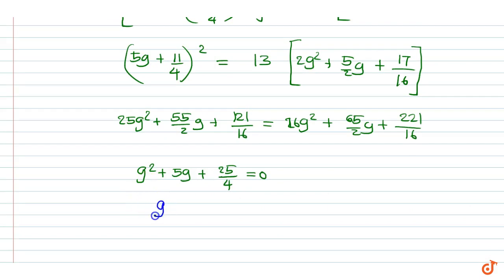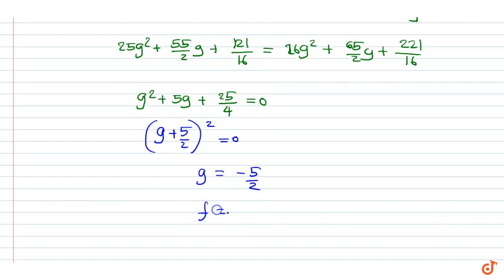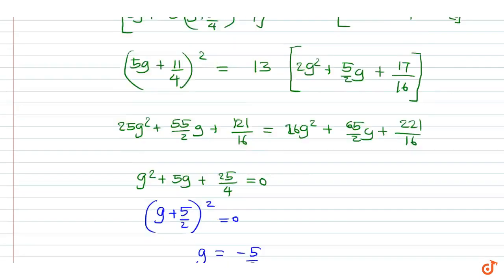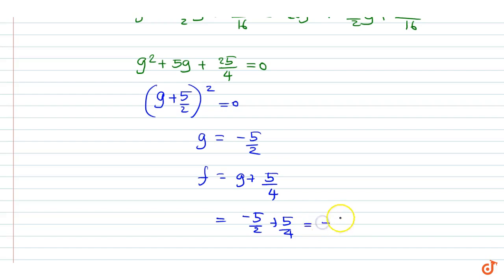We can write this as (g + 5/2)² = 0, giving g = -5/2. And f = g + 5/4 = -5/2 + 5/4 = -5/4.